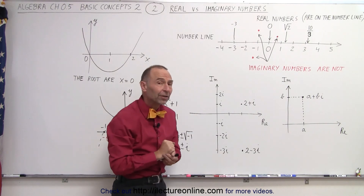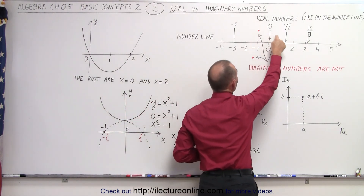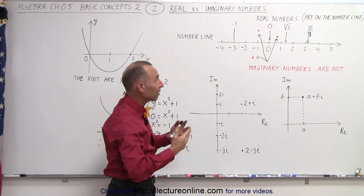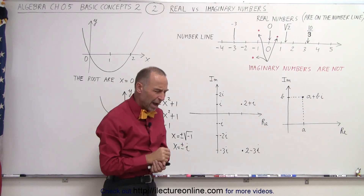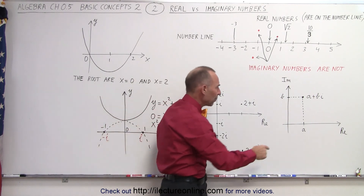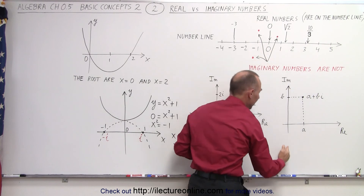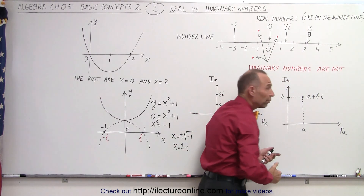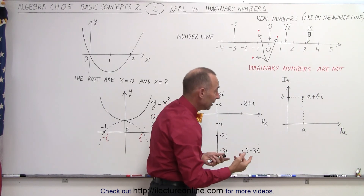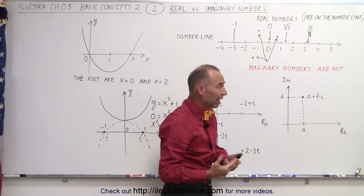Imaginary numbers cannot be found on the real number line. For example, these dots here are representations of imaginary numbers — they're not on the number line, so they're not real numbers, they're imaginary numbers. We have what we call the real axis, which is a representation of the number line, and then a vertical axis which represents the imaginary part of all the numbers. If a dot is found away from the number line, it cannot be a real number — it's an imaginary number.